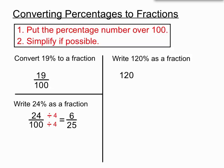Once again, we'll write the percentage number over 100 to create our basic fraction, then simplify. The biggest number that can divide into 120 and 100 is 20. So we'll divide the top by 20 and the bottom by 20.